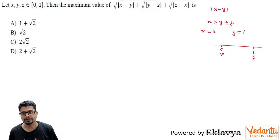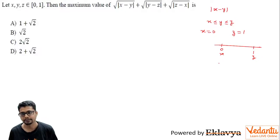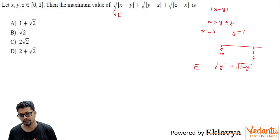Given that z is the maximum and x is the minimum of x, y, z, we take x = 0 and z = 1 to maximize the expression. We are left with expression E = √y + √(1−y) + 1, since y is between 0 and 1 so (1−y) ≥ 0, and √1 = 1.